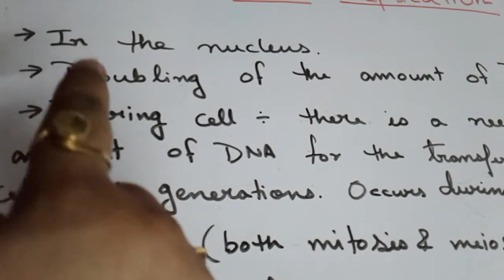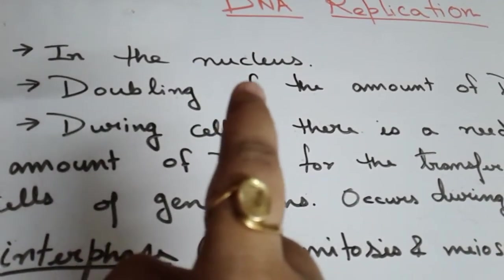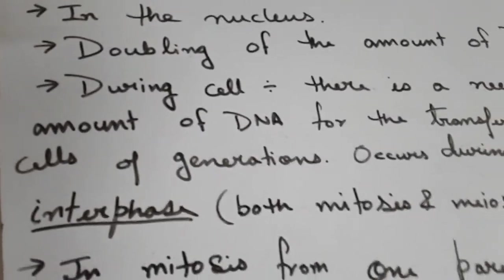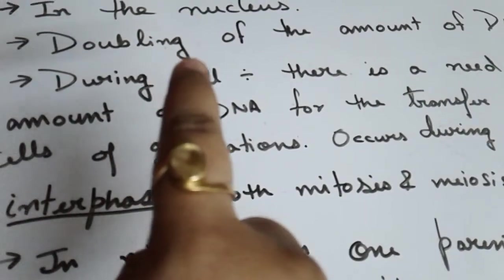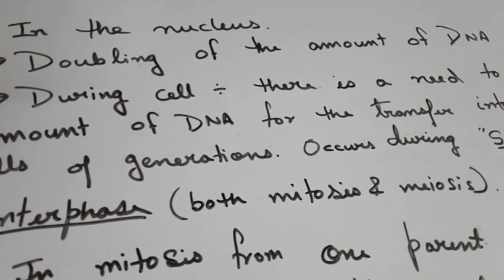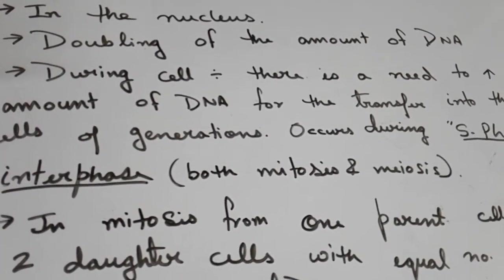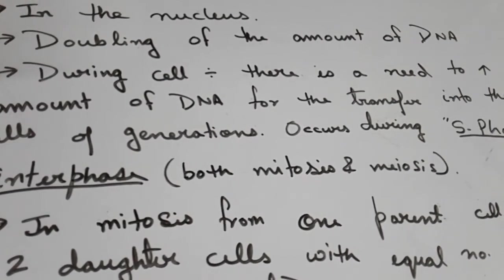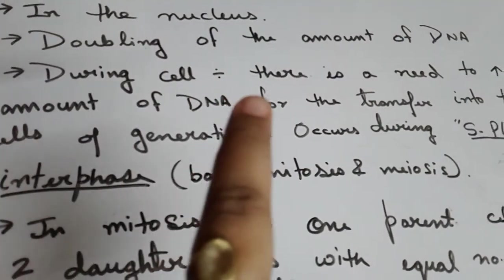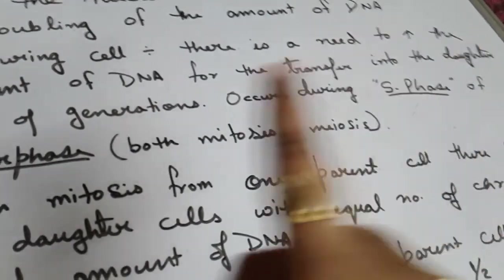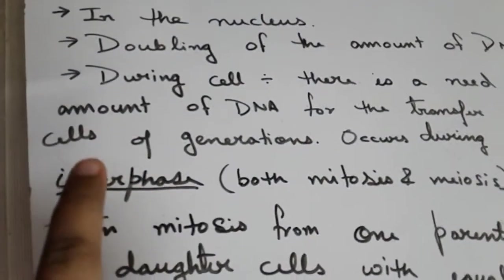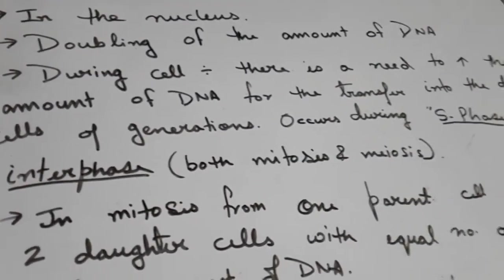The first point: DNA duplication or replication takes place inside the nucleus. It is also known as the doubling of the amount of DNA — that is, multiplication or, to be very precise, doubling of the amount of DNA. During cell division, there is a need to increase the amount of DNA for transfer into the daughter cells of subsequent generations.